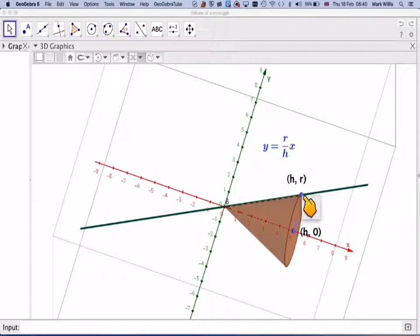So in order to find the equation of the line, we can use the idea of y equals mx. We can use mx, but we don't need c because it goes through the point 0, 0.